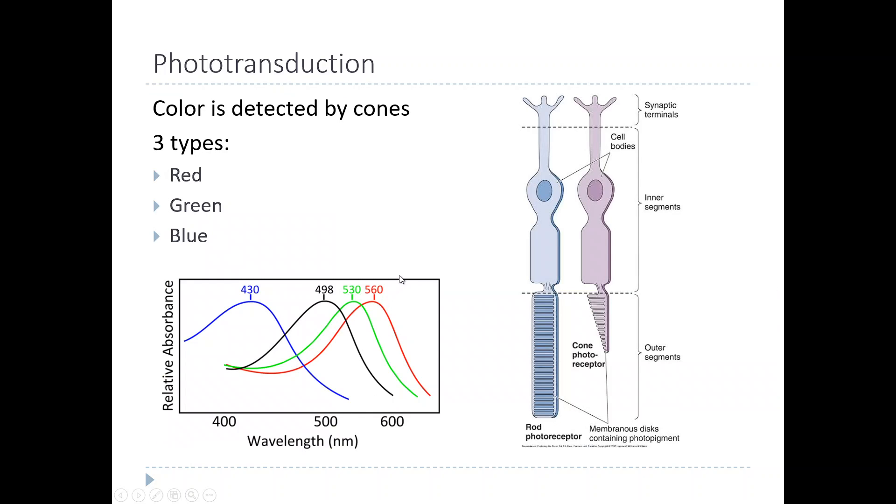Cones express three different kinds of opsins. Each one absorbs light at a different wavelength. What we call blue light corresponds to a wavelength of about 430 nanometers, and it turns out that blue cones express a version of opsin that absorbs light at that wavelength. Green cones express an opsin that absorbs light about 530 nanometers, which is the wavelength of light that we think of as green. And 560 nanometers is the wavelength of red light, and so red cones contain opsins that absorb light at that wavelength.